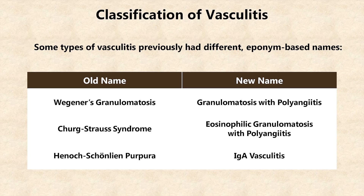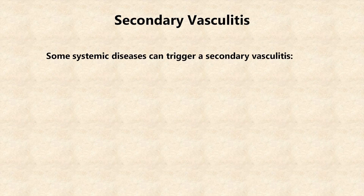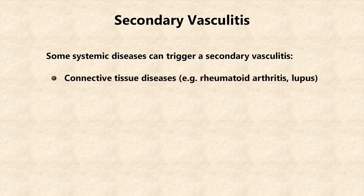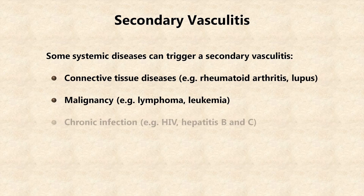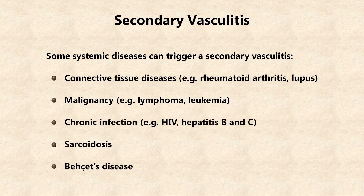Wegener's granulomatosis was named after Friedrich Wegener, who was a Nazi doctor speculated to have participated in experiments on concentration camp prisoners. But it seems that once one eponym was intentionally removed from the formal lexicon, all of the others are following. It seems likely that Takayasu's Arteritis and Kawasaki disease will both be renamed in the near future. In addition to the types of primary vasculitis just listed, some systemic diseases can trigger a secondary vasculitis, including connective tissue diseases, malignancy, chronic infection, sarcoidosis, and Behçet's disease, the last of which is often considered a primary vasculitis itself.